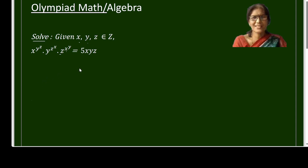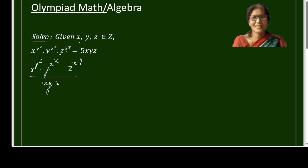Taking x, y, z to the left side by division, you will get x^(y^z) times y^(z^x) times z^(x^y), all divided by x times y times z, is equal to 5.